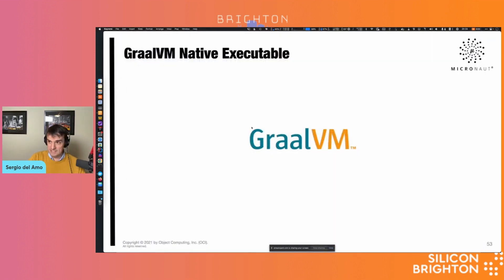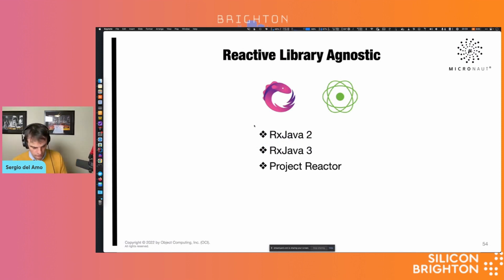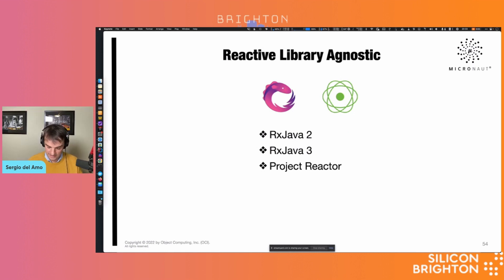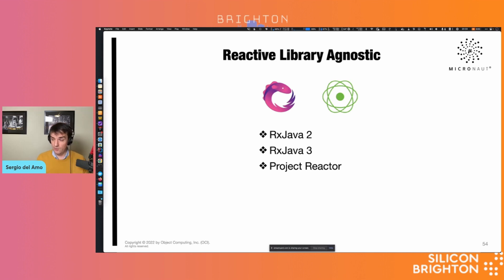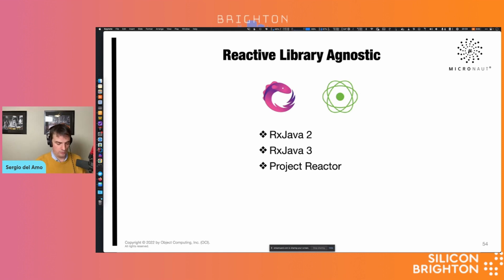This was a Micronaut 101 demo. We have integration with reactive libraries — RxJava 2, RxJava 3, and Project Reactor. Internally we use Project Reactor in Micronaut 3, so my recommendation is to use Project Reactor with Micronaut. But if you want to stick with blocking code, you don't have to use reactive libraries at all when working with Micronaut. Don't be intimidated — reactive is optional.